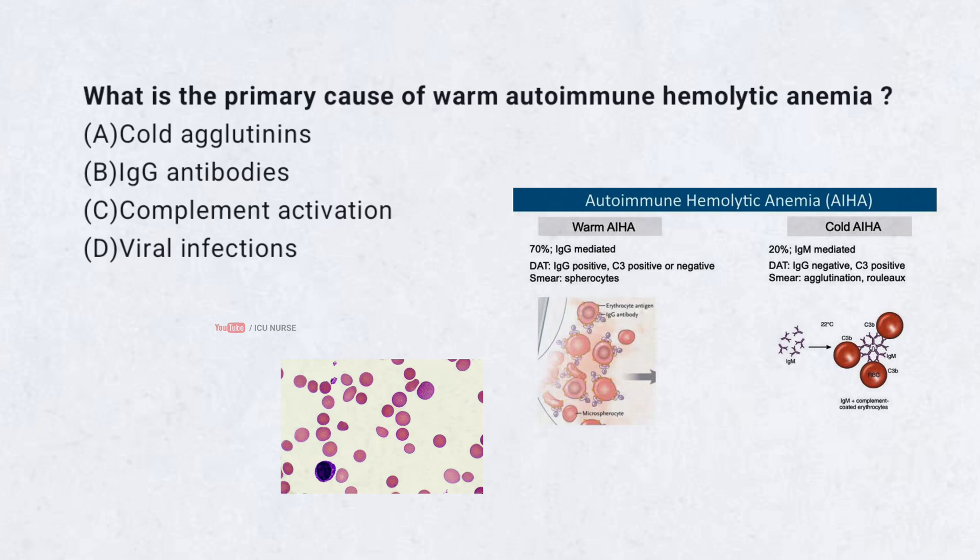What is the primary cause of warm autoimmune hemolytic anemia? A. Cold agglutinins, B. IgG antibodies, C. Complement activation, D. Viral infections. Correct answer: B. IgG antibodies. Warm autoimmune hemolytic anemia involves IgG antibodies that attack RBCs at body temperature.